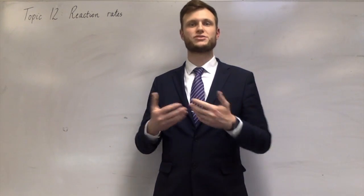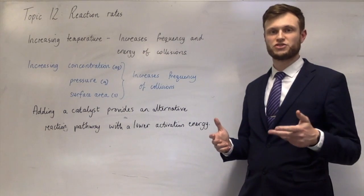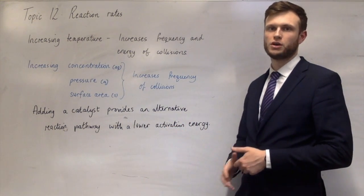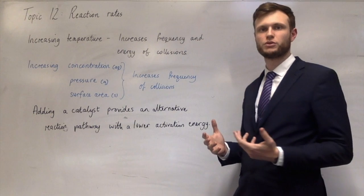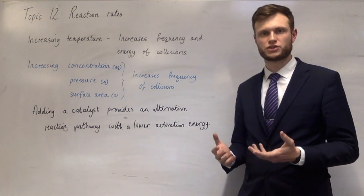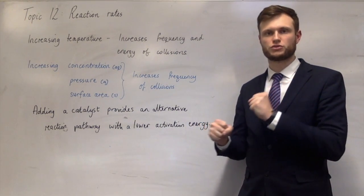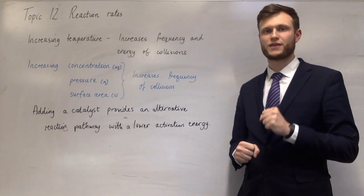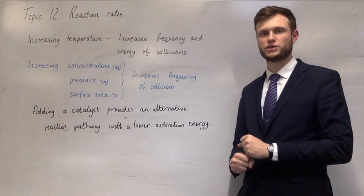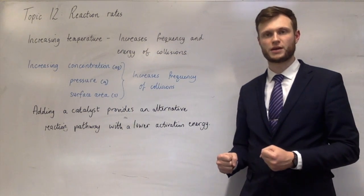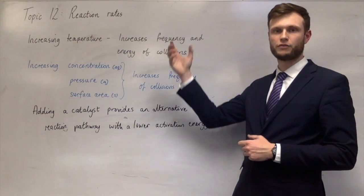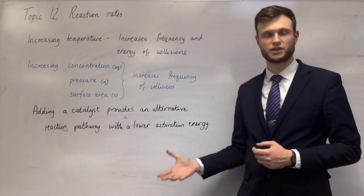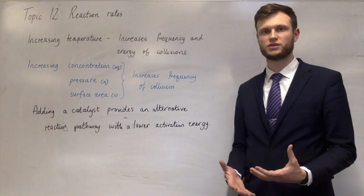Now that's still true, but we're going to add to that. When answering these questions at A-level, this is mostly enough, but you also need to talk a lot about successful collisions. For a reaction to happen, you need to have two particles collide in the correct orientation with the correct amount of energy — more than the activation energy — for the bonds to break and for those chemicals to react. So when you have more frequent collisions, it's more likely that those collisions are going to be successful.